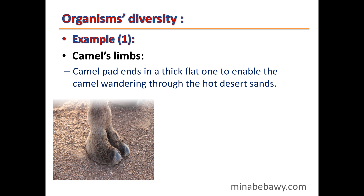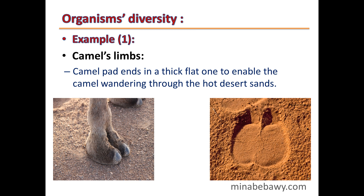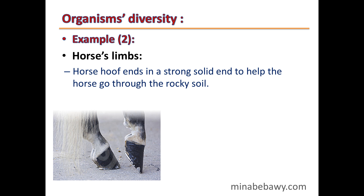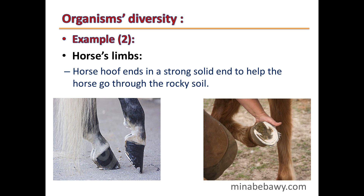Example 1 – Camel's limbs: The camel's pad ends in a thick, flat structure to enable the camel to wander through hot desert sands. Example 2 – Horse's limbs: The horse's hoof ends in a strong, solid structure to help the horse move through rocky soil.